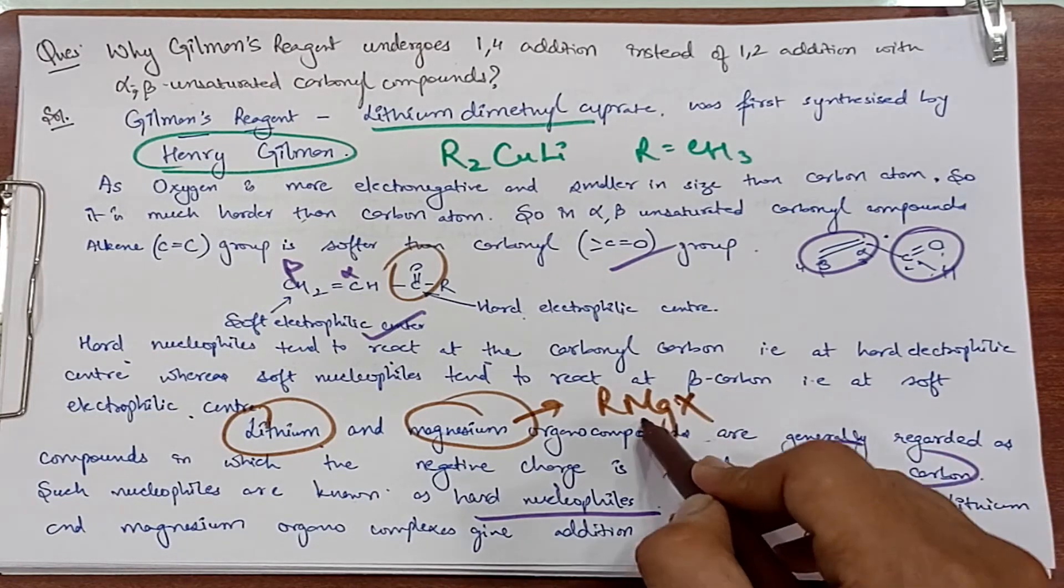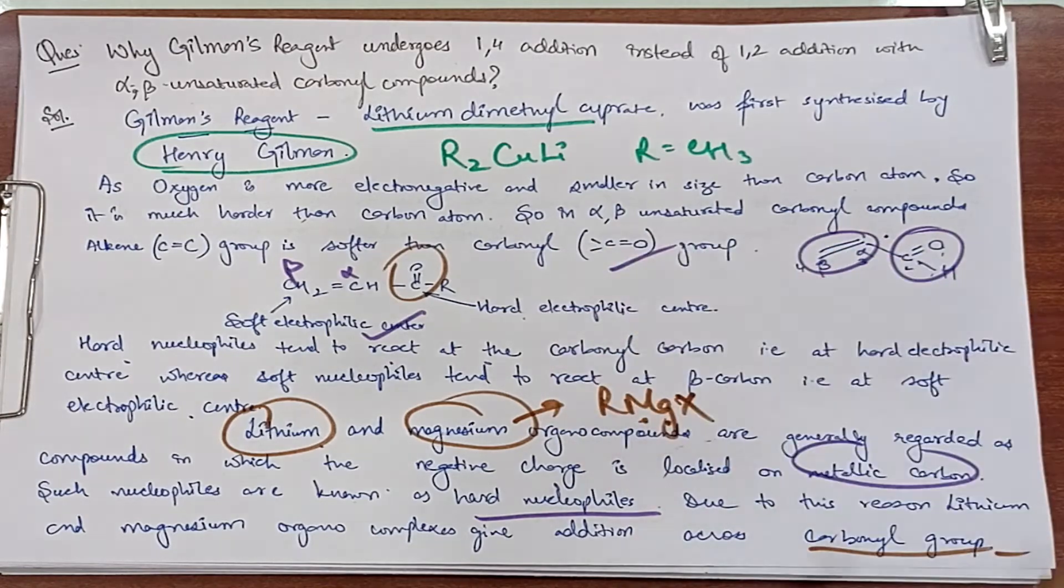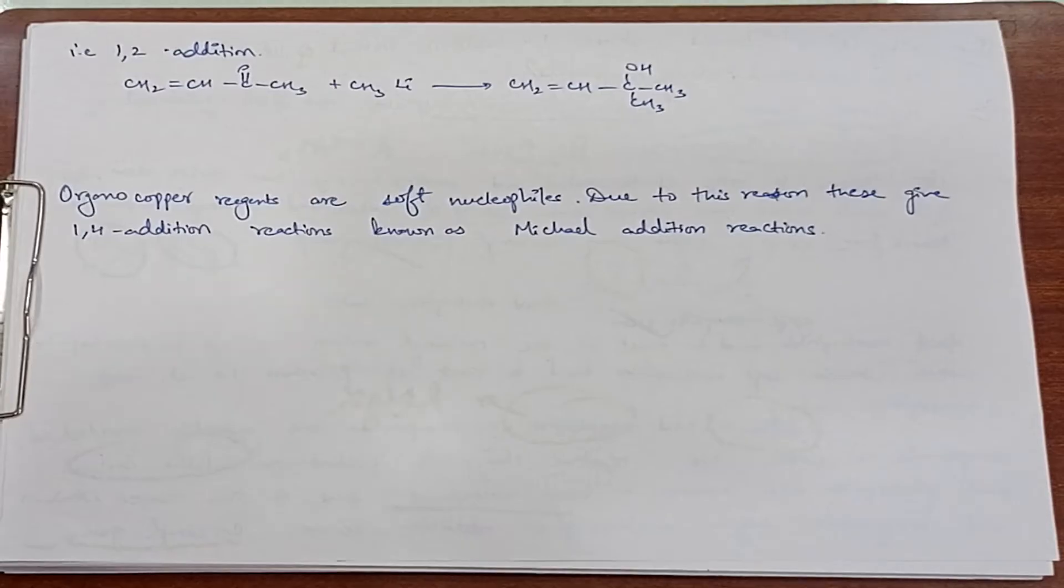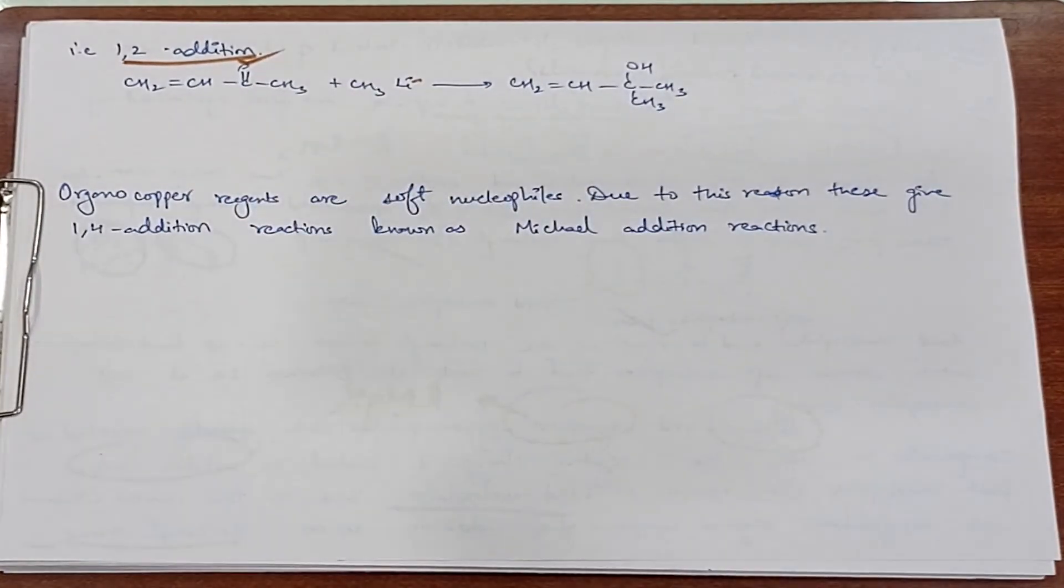This is our addition. This addition occurs because magnesium is hard. This is why the carbonyl group reacts. We see here 1,2-addition, where lithium is used. The lithium compound, organolithium, gives 1,2-addition.